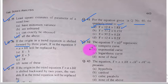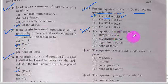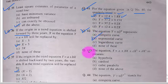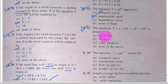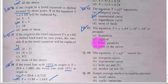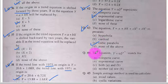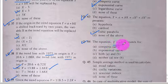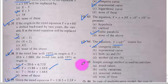Question number 42. The equation y = αβˣ represents an exponential curve — option B is the correct option. Question number 43. The equation y = a + bx + cx² + dx³ represents a cubic parabola — option C is the correct option. Question number 44. The equation y = αβ^(γˣ) stands for a Gompertz curve — option A is the correct option.